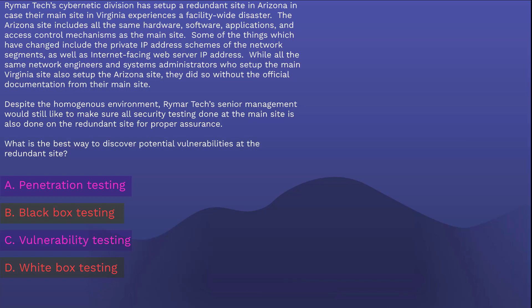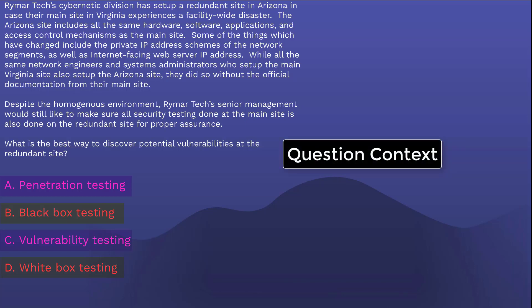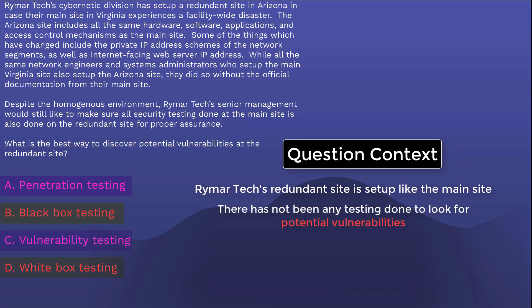The next step is to scan the question again and see which pair of choices we can eliminate — which two choices don't really align with the context of this question. The question is essentially talking about a company which has set up a redundant site, but it has not yet undergone a full security test to look for potential vulnerabilities. That term — potential vulnerabilities — is important to focus on. Just because this redundant site is set up like the main site doesn't mean it is as secure as the main site. Remember, the question says there are still slight differences like the IP addresses and the fact that the same documentation wasn't used.